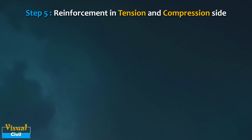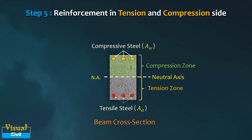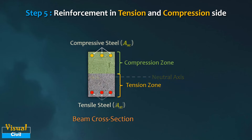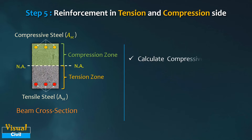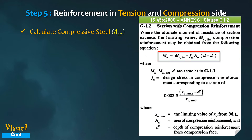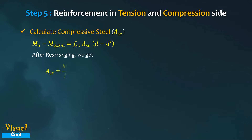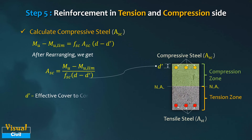In a doubly reinforced section, reinforcement is provided in both the tension zone and the compression zone. Steel in the compression zone is called compressive steel, and steel in the tension zone is called tensile steel. In Step 5, compute the required area of compressive steel Asc and tensile steel Ast. Calculate Asc by referring to the expression in clause G-1.2 of IS 456, and rearrange the expression to get Asc. Assume d′ (effective cover to compressive steel) equal to 50 mm if not specified.